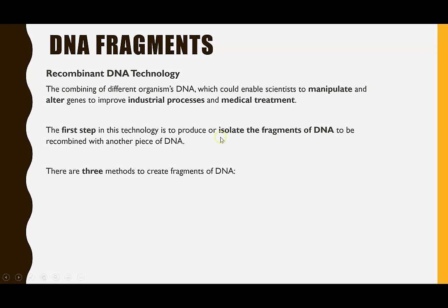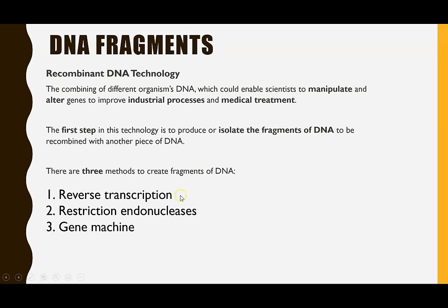The first step is to isolate the gene of interest. Isolating or creating DNA fragments means getting the gene you want to insert into another organism's DNA. There are three methods: using the enzyme reverse transcriptase, performing reverse transcription; using restriction endonucleases to cut up DNA; and the most modern version, the gene machine.